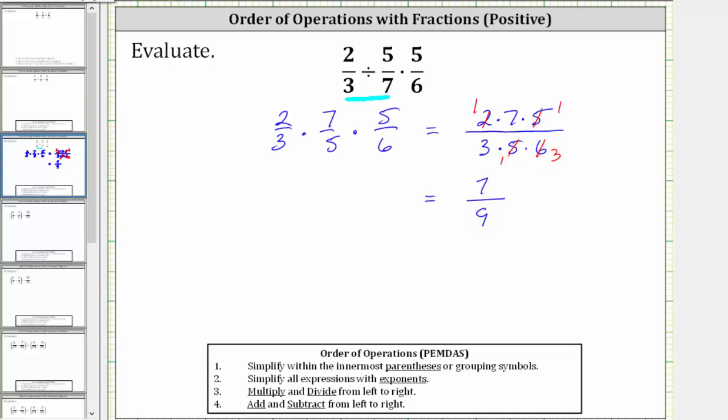The expression simplifies to seven-ninths, and we know seven-ninths is simplified because the only common factor between seven and nine is one. I hope you found this helpful.